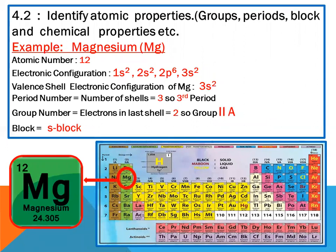Now we identify group, period, and block from the valence configuration. Example: magnesium, atomic number 12. Electronic configuration: 1s2 2s2 2p6 3s2. Valence shell is 3s2. It is in the third period, because the number before the subshell is 3. Group number is 2A because it contains two valence electrons. The configuration ends at the s subshell, so it is an s-block element. Magnesium is in period 3, group 2A, s-block.